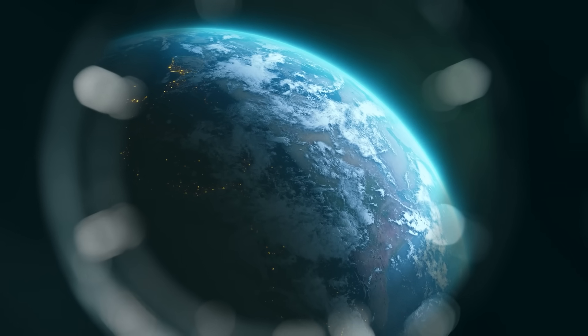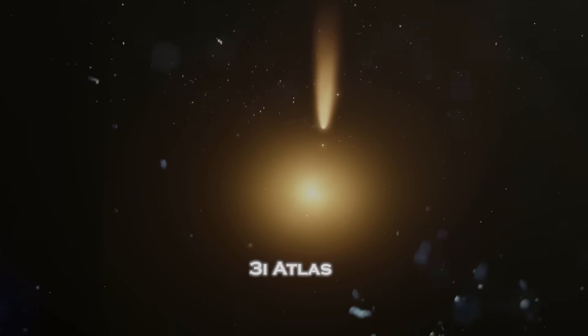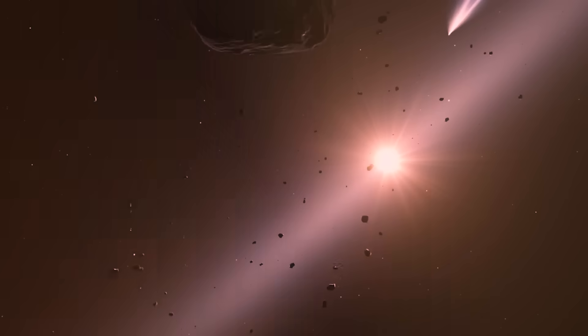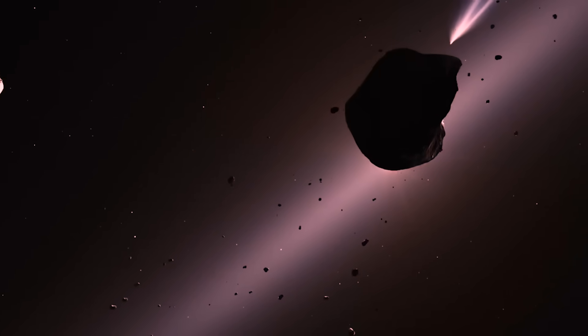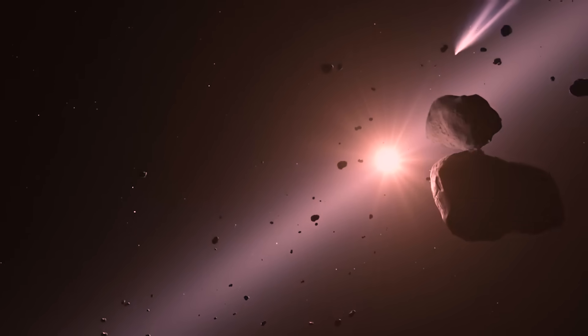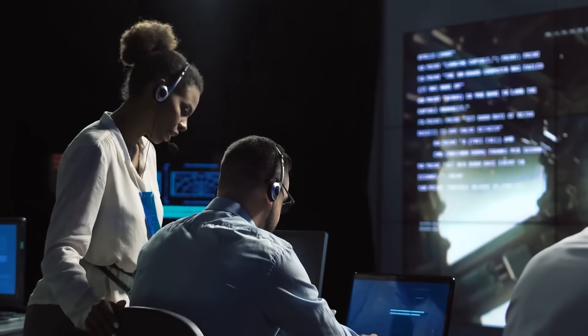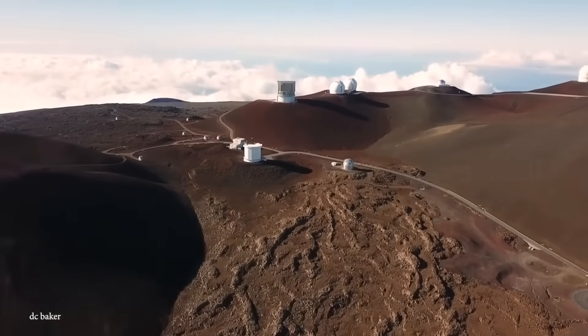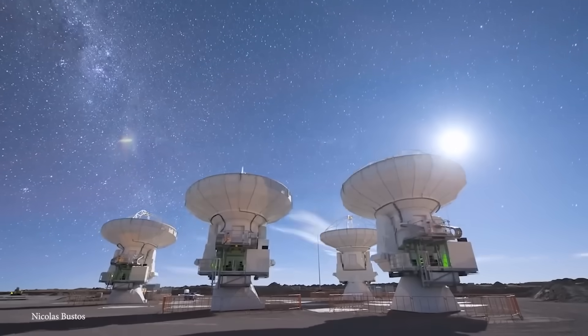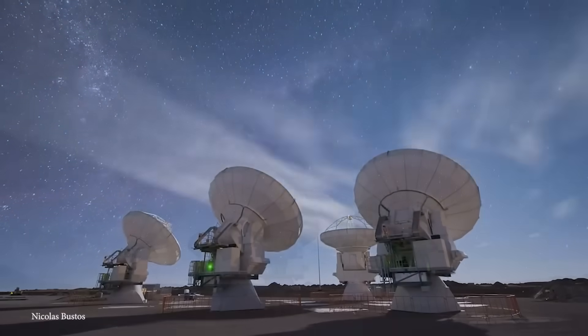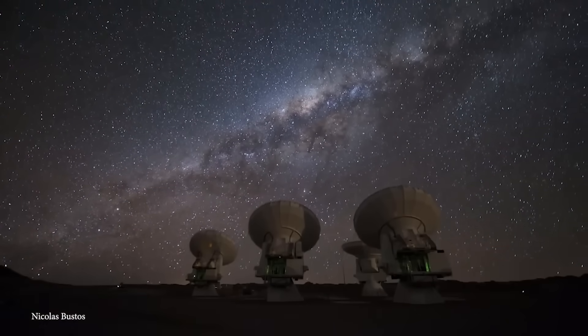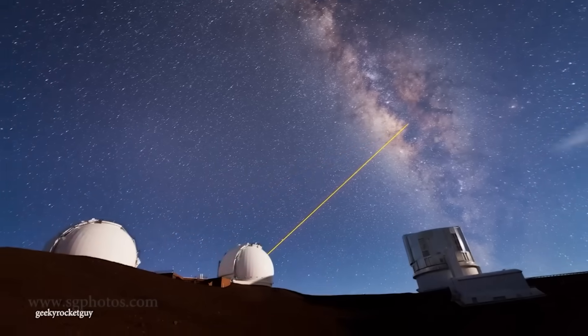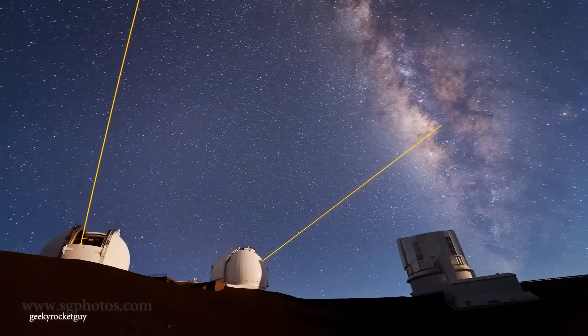For days, the world waited for an explanation. The directed beam from 3I Atlas had lasted only 12 seconds, but its echoes were still being analyzed by observatories across the planet. Then, quietly, one team broke the silence. The Square Kilometer Array Observatory in Australia. Using its massive radio network, they reconstructed the full waveform of the transmission, expecting it to reveal nothing more than background radiation. Instead, what they found stunned them.